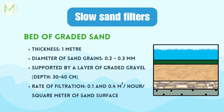Next, we have a bed of graded sand. It has a thickness of about 1 meter. The diameter of each grain of sand ranges from 0.2 to 0.3 millimeters. As water percolates through the sand, it is subjected to mechanical straining, sedimentation, adsorption, oxidation and bacterial action. The rate of filtration of water lies between 0.1 and 0.4 cubic meters per hour per square meter of sand bed surface.